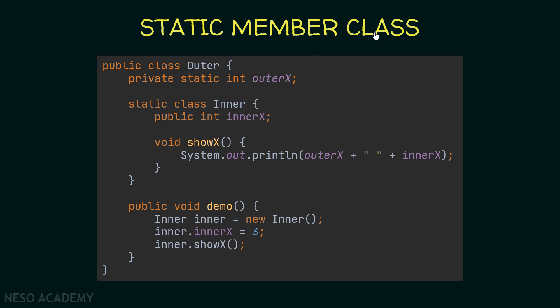Now let's talk about static member classes. We still declare a class inside another class, but now it is static. Since the inner class is static, I changed outerX to be static as well, because to access members of the outer class inside a static inner class, those members must be static — just like you cannot access non-static members inside a static method.